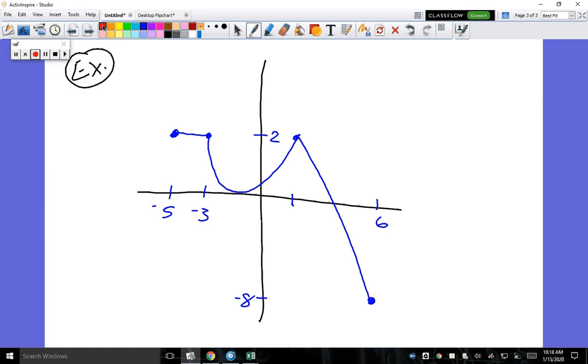All right, so here's an example from your Delta Math on Day 3 homework. It's asking you to find the area between negative 1 to 6.